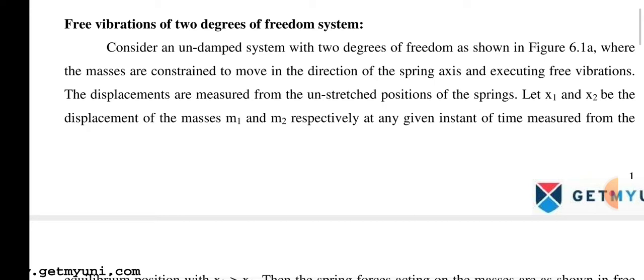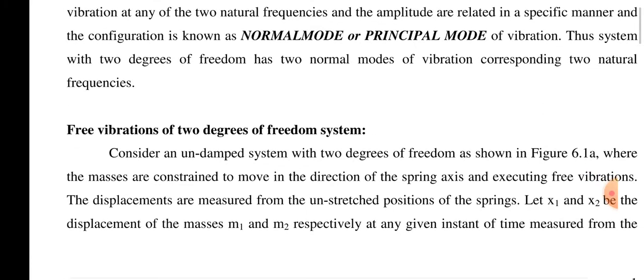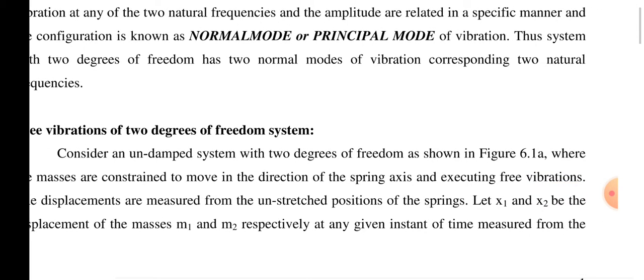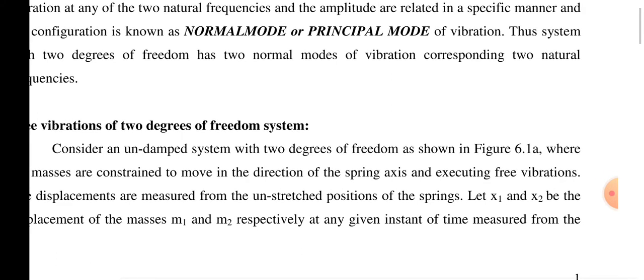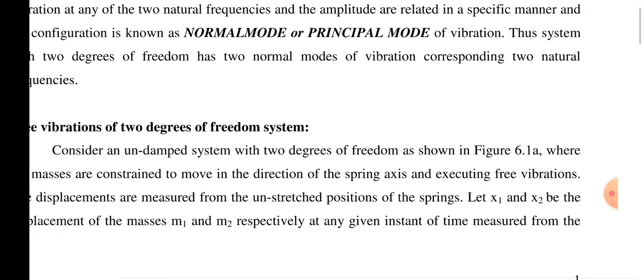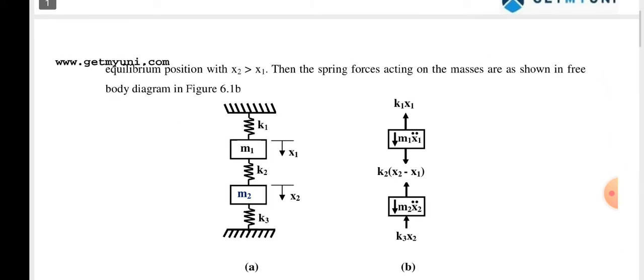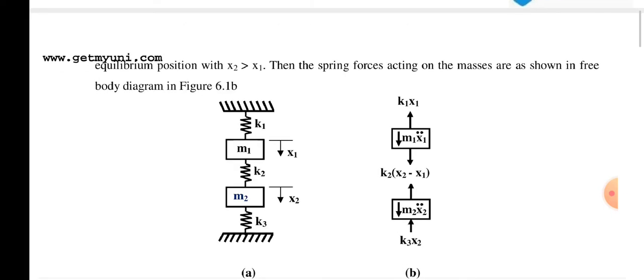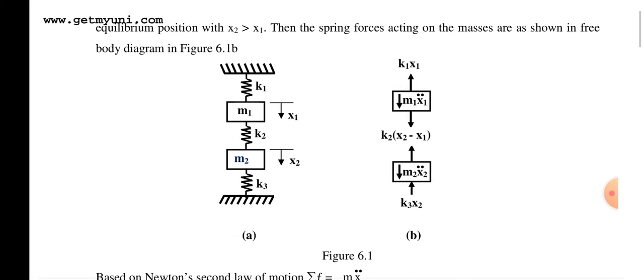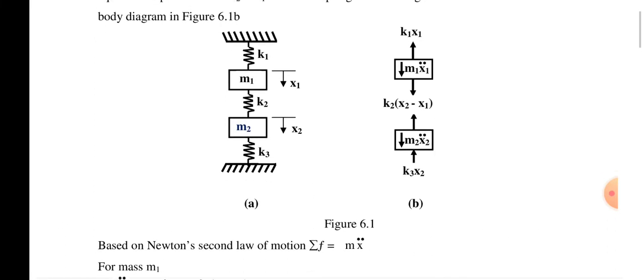The displacement is measured from the unstretched positions of the spring. Let x1 and x2 be the displacement of masses m1 and m2 respectively at any instant of time, measured from their equilibrium positions, with x2 greater than x1. These are the two spring configurations given, and the forces acting on the masses are then identified.